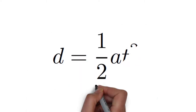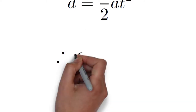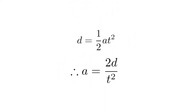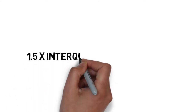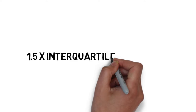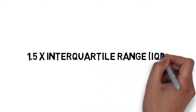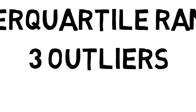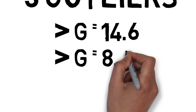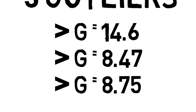In order to obtain g, we rearranged d equals one-half at squared to a equals 2d over t squared and calculated g for each trial. We conducted 16 trials. We used the 1.5 times interquartile range, or IQR, rule to determine whether there were any outliers. If a value was more than 1.5 times IQR above Q3 or less than 1.5 times IQR below Q1, it would be considered an outlier. We noticed there were three outliers: g equals 14.6, g equals 8.47, and g equals 8.75. We excluded these values when calculating g and the margin of error.